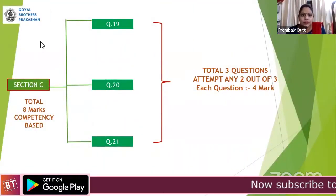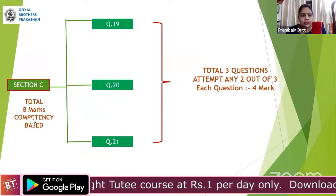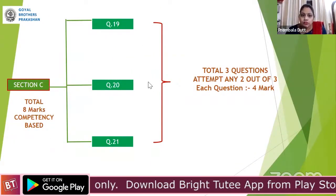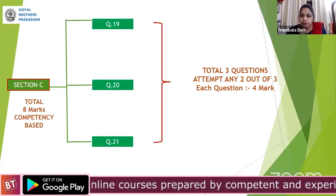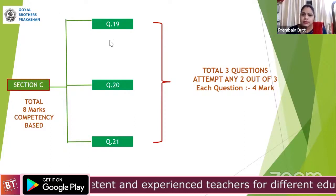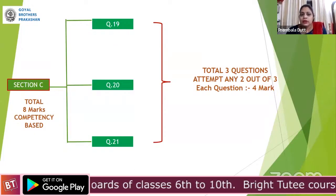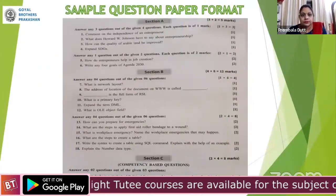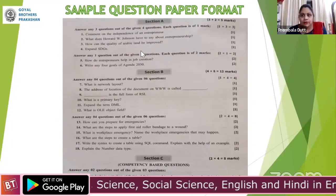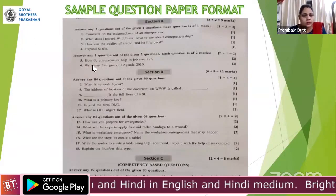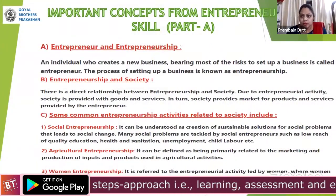The last section C is competency-based — question numbers 19, 20, and 21 — with a total weightage of eight marks. They have to attempt only two, so one choice is given. Generally in web application-based questions, students get confused and sometimes write incorrect answers. Database is a very simple concept — if students are well trained in database, they should attempt one question from database and one from web application.